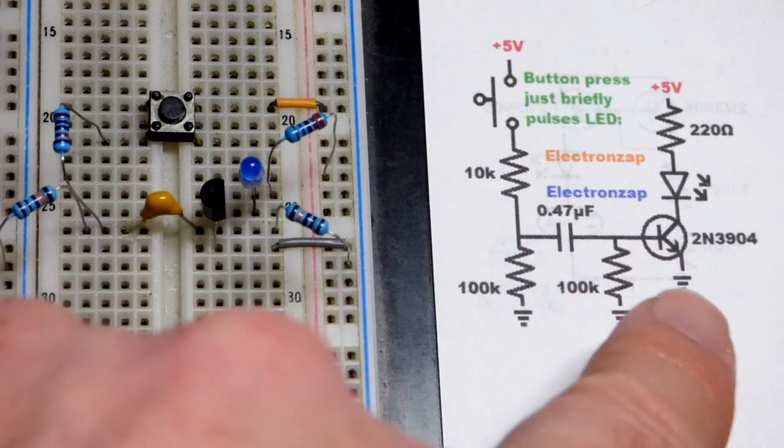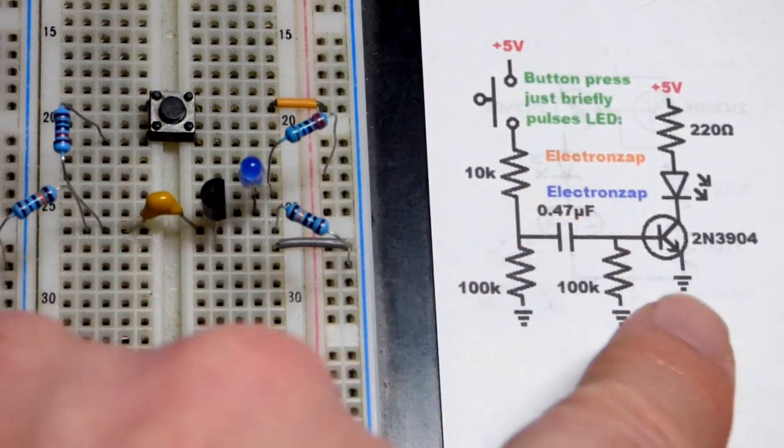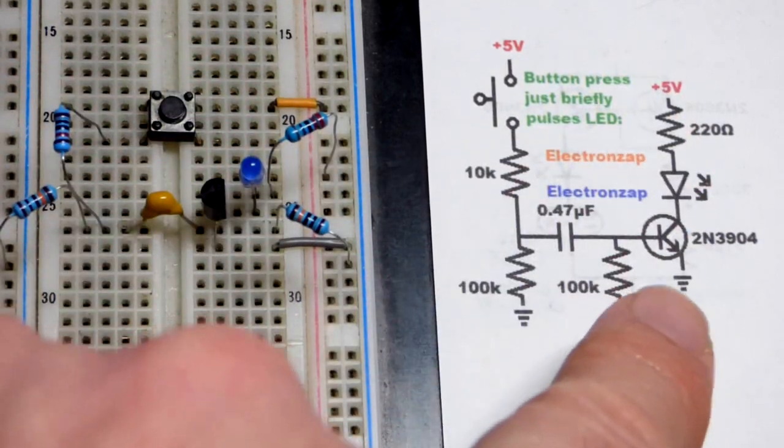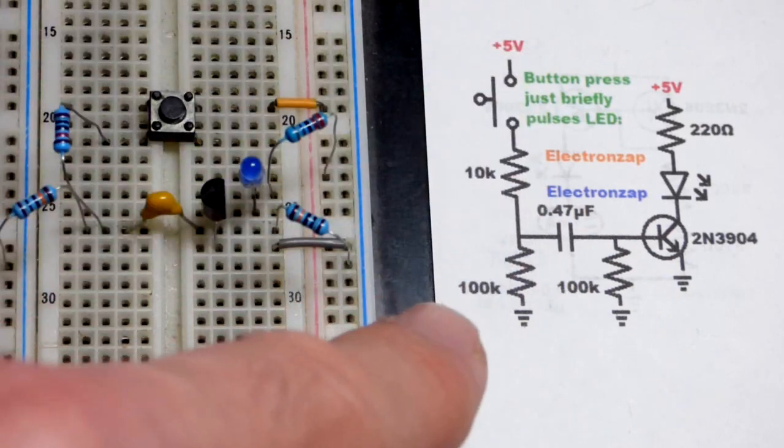And so once it's done charging, current stops, base-to-emitter, and thus current stops through the load, no matter how long we hold the switch.